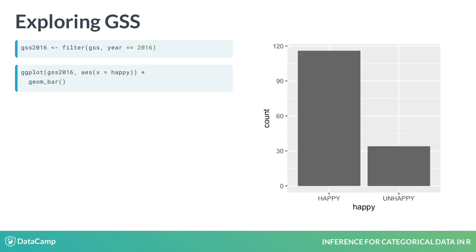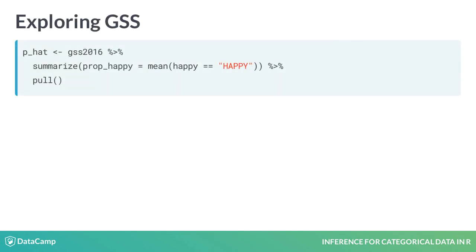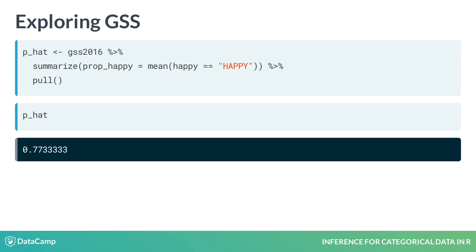Since this is categorical data, I'll visualize it with a bar chart. We learn that the most common response was happy, but let's go a step farther and calculate the exact proportion of the sample that responded this way. We want to summarize the happy variable with a single proportion. We ask for which respondents their happy value is exactly equal to happy, which results in a column of trues and falses. You can find the proportion of trues by simply taking the mean. I'll save that as p-hat. We learned that around 77% of our sample is happy. This should be a good estimate of the percent of all Americans that are happy, but it's not a sure thing since we have only asked a small proportion of them.